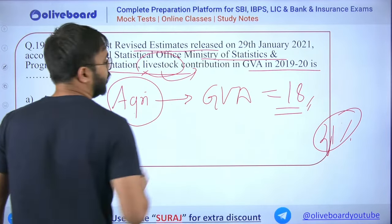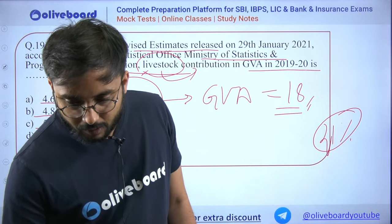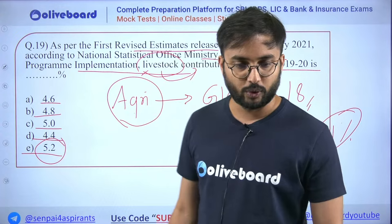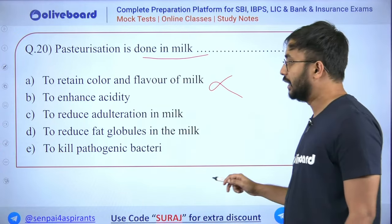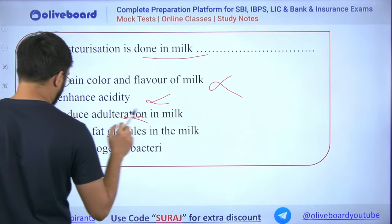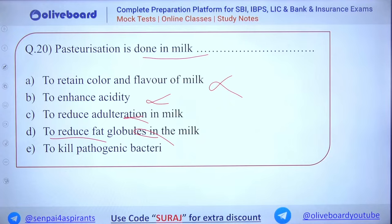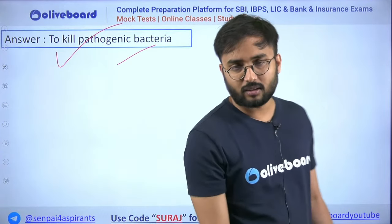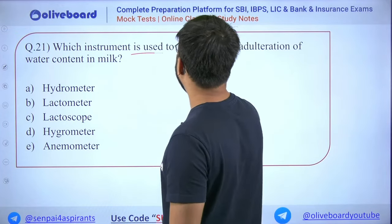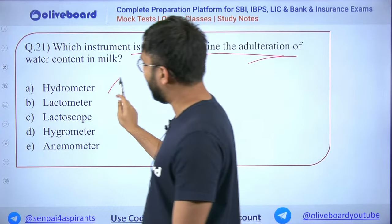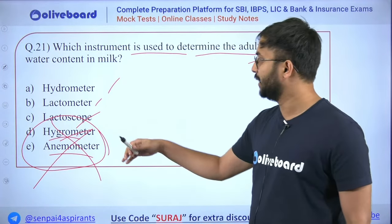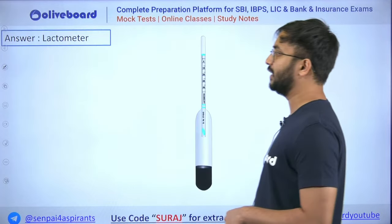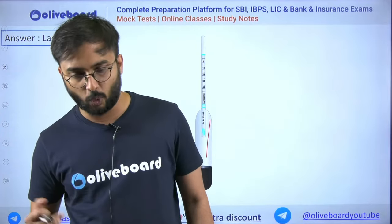The answer is 5.2% — option E. Livestock contribution to GVA is 5.2%. Nobody gave the correct answer. Pasteurization is done to kill pathogenic bacteria in milk for sanitary purposes. Next: which instrument determines adulteration of water content in milk? Hygrometer and anemometer — eliminate. Hydrometer relates to water. The answer is lactometer — it measures how much milk vs water is present.